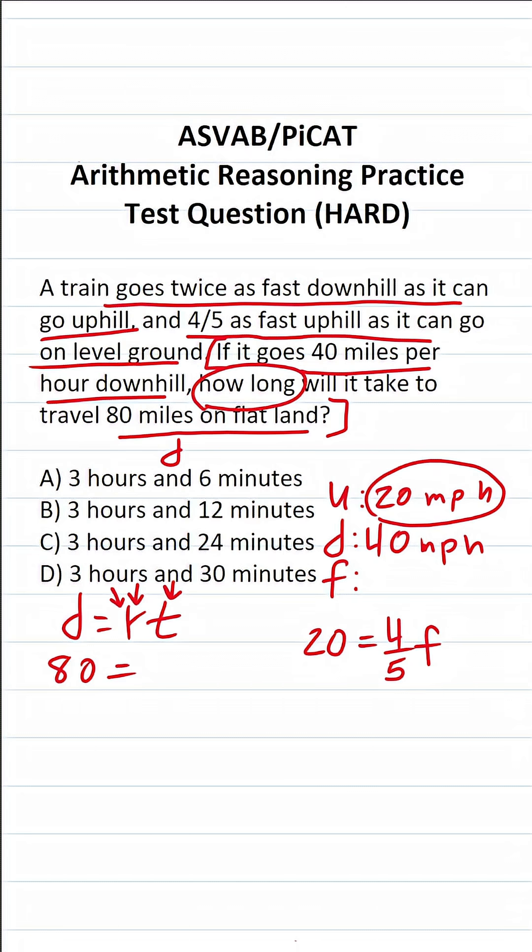So the first thing we want to do is clear this four-fifths in front of this F. This is four-fifths F. We want to clear this four-fifths. To do that, we're going to multiply both sides of this equation by the reciprocal, notably by 5 over 4. This crosses out. 5 times 20 is 100. 100 divided by 4 is 25. So this says 25 equals F. So we know the rate of this train on flat land is going to be 25 miles per hour.